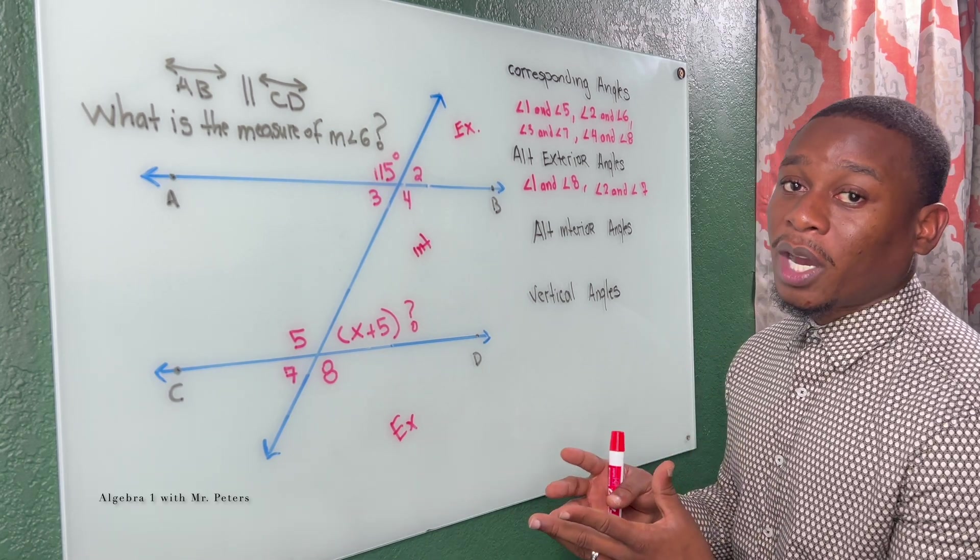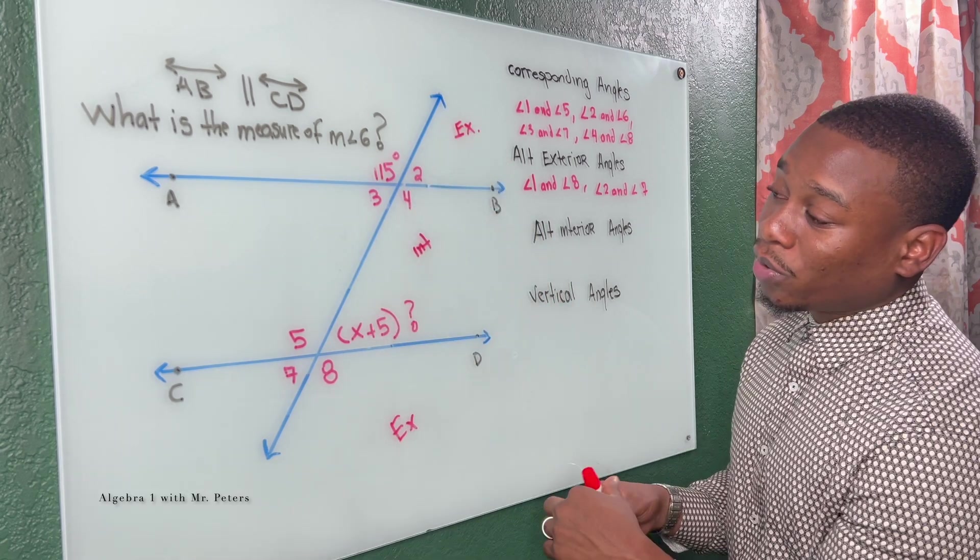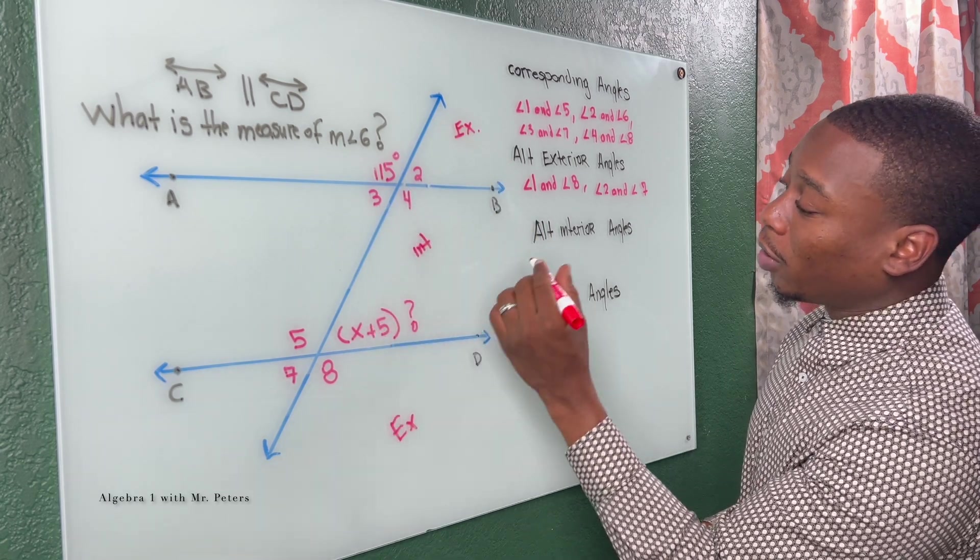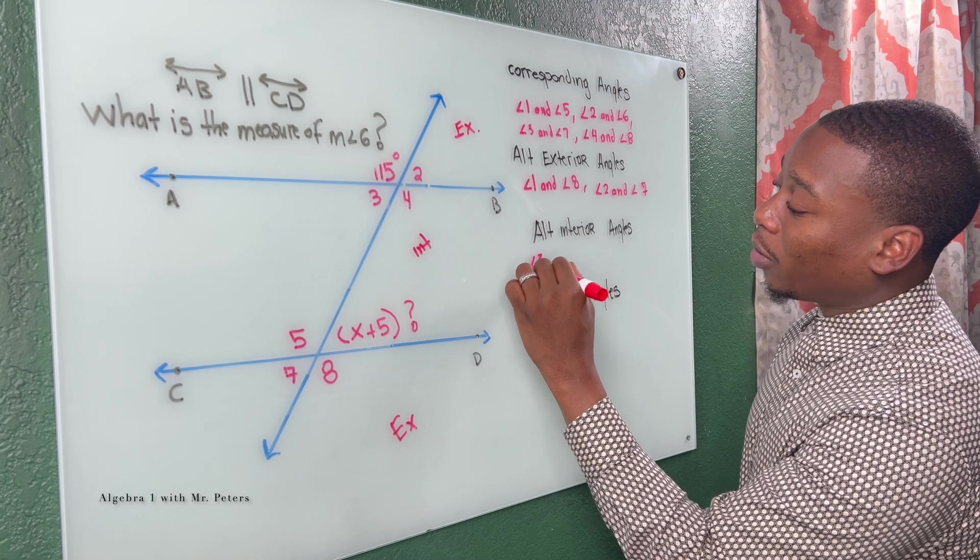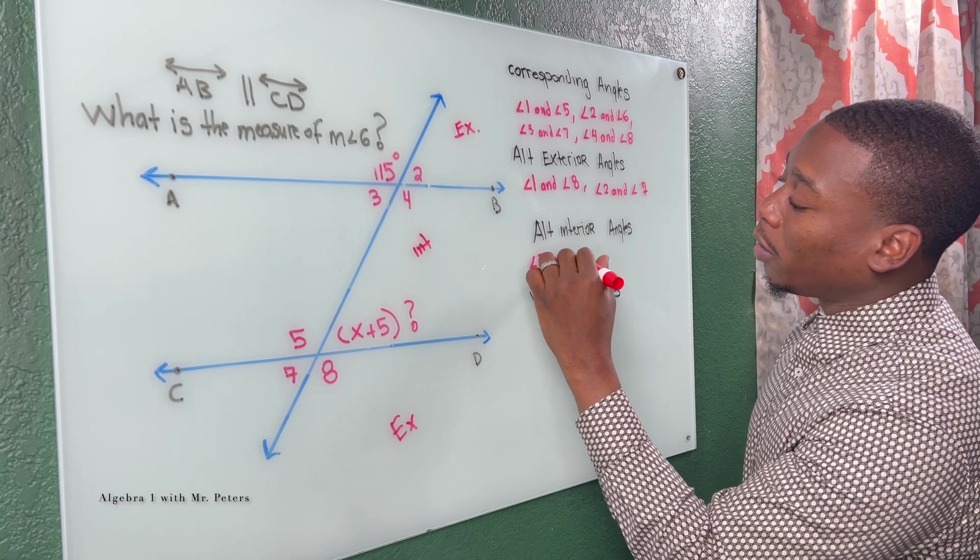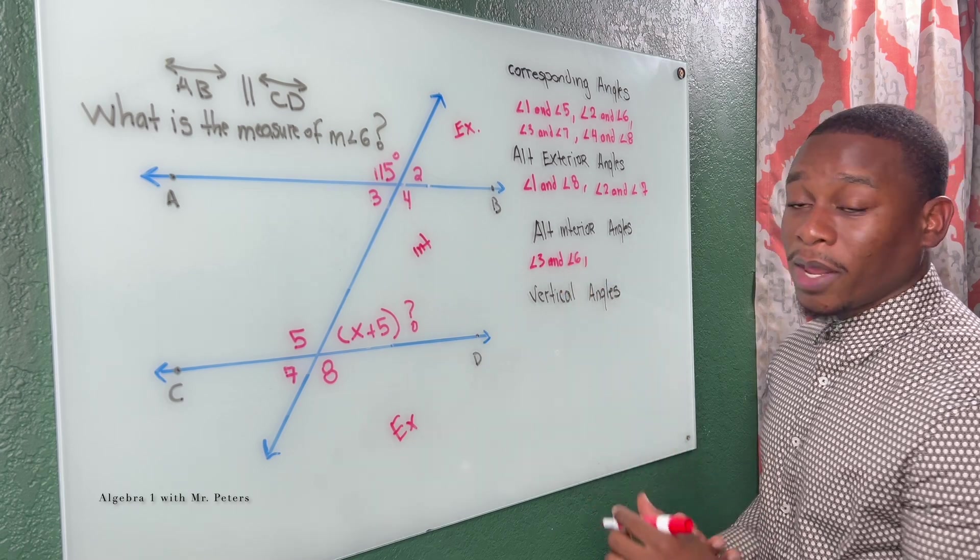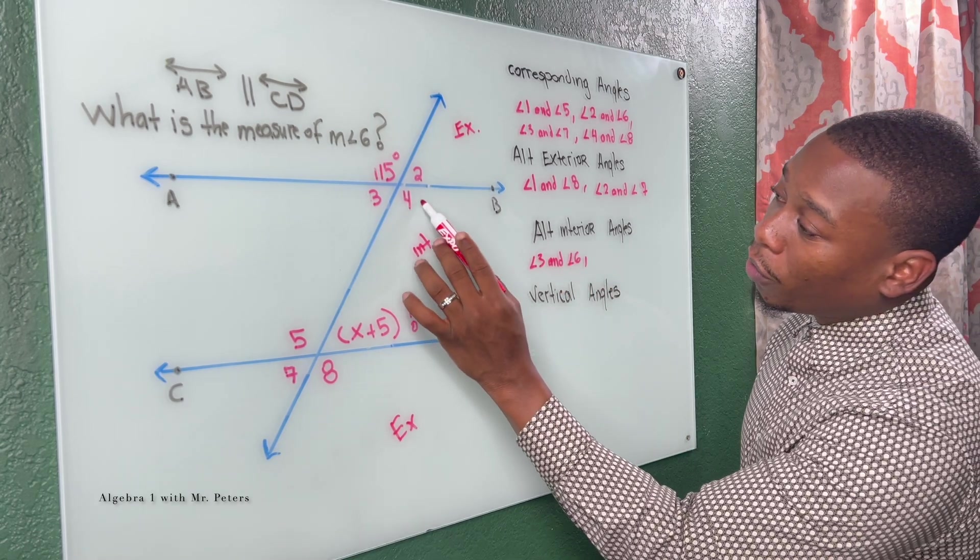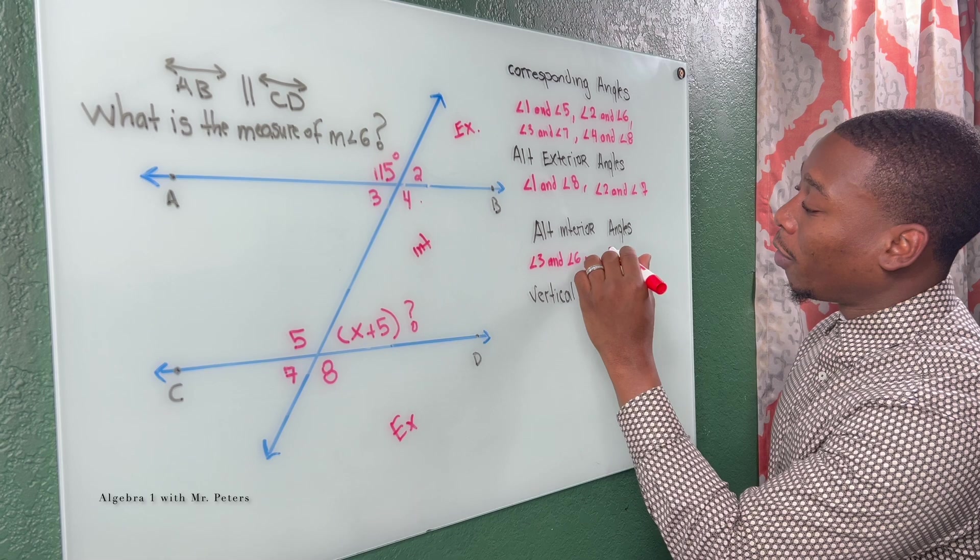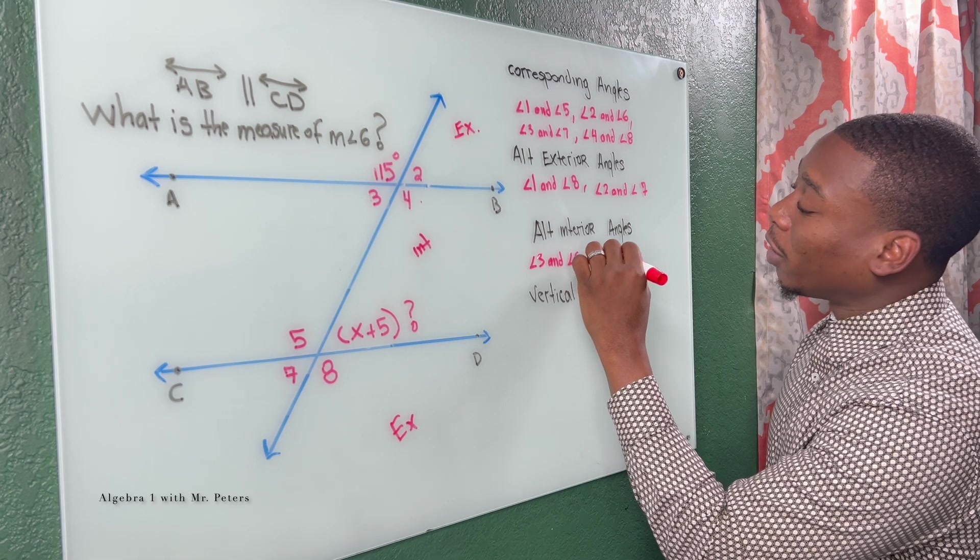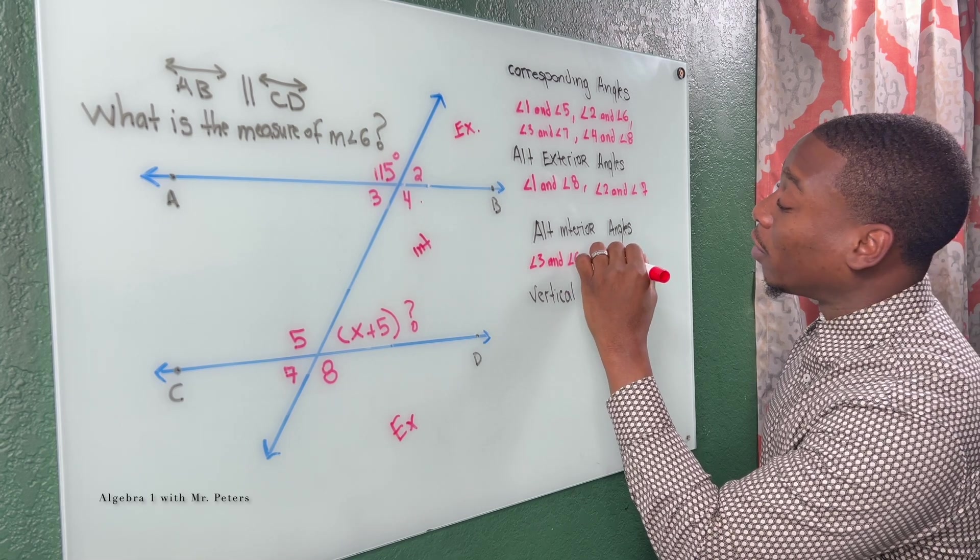They're going to be on the opposite side of this transversal. So angle three, angle six, these will be alternate interior angles. So they're going to be the same measure. Same thing with angle four and angle five. These are going to be alternate interior angles as well.